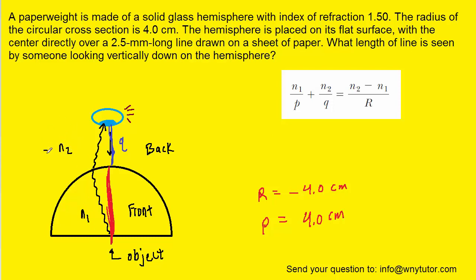Now, over here is air, so the n2 will just be 1. n1 was given to us in the question. That's the index of refraction of this material that the paperweight is made of, so that's going to be 1.5.